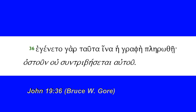This is verse 36 of the 19th chapter of the Gospel of John. John is narrating the incident of the soldiers coming. They wanted to hasten the death of the criminals who had been crucified, and they broke the legs of two of them to hasten their death. They come to Christ and discover that he's already dead. John has told us about piercing the side and outflowing blood and water, and then he wraps all of this up in a comment tying into Old Testament prophecy.